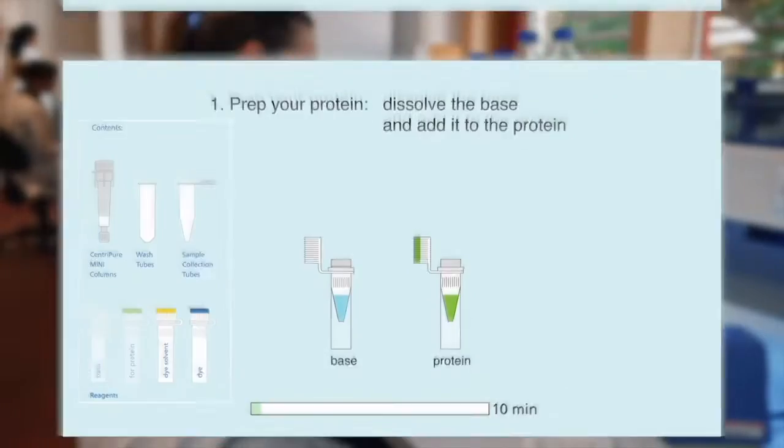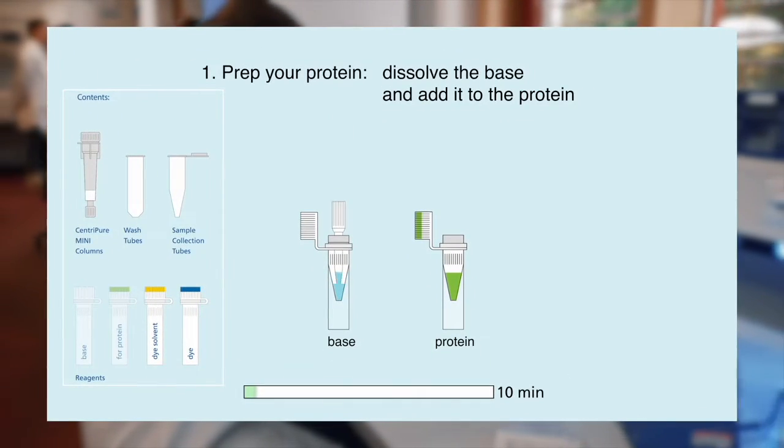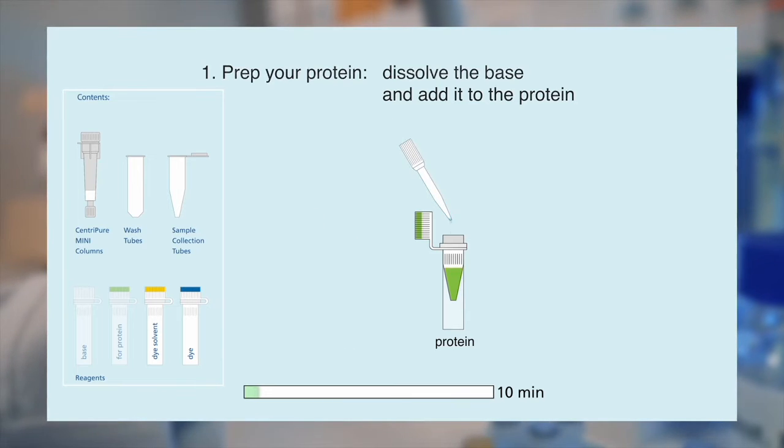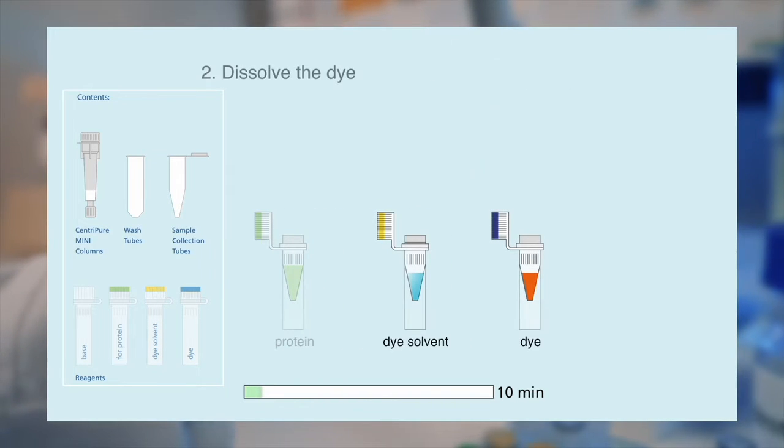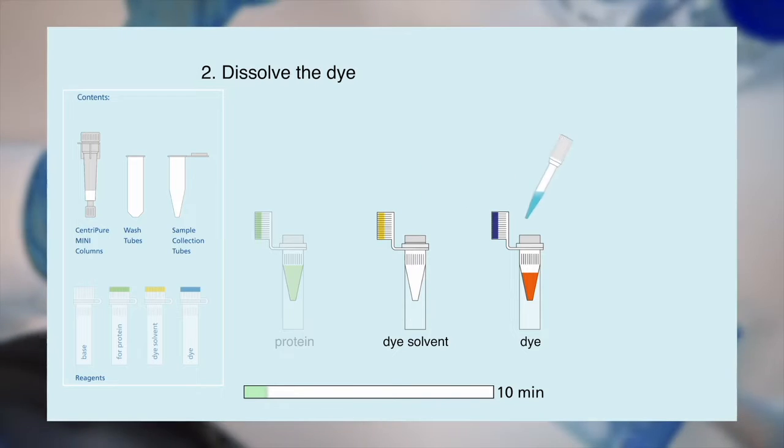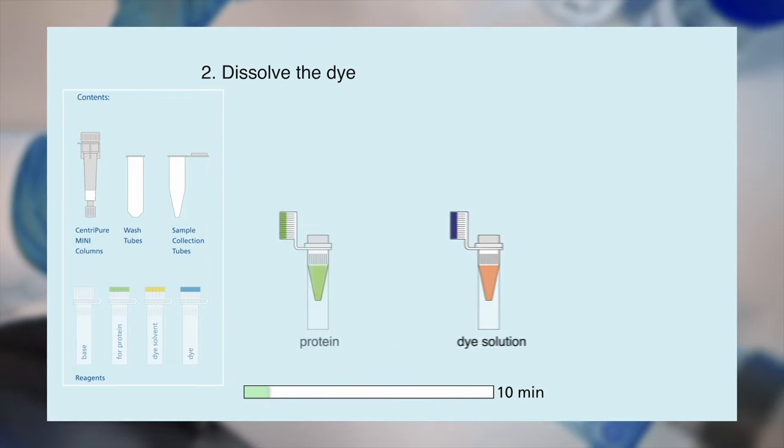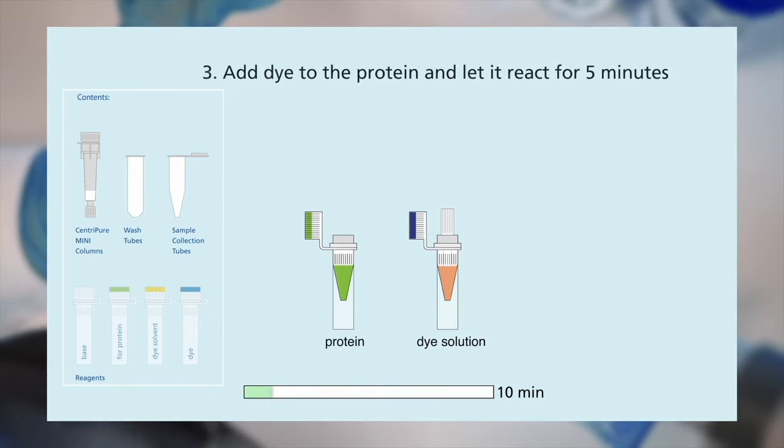First, we prep our protein. We dissolve the base and add it to the protein. Next, we dissolve the dye. We add the dye to the protein and let it react for five minutes.